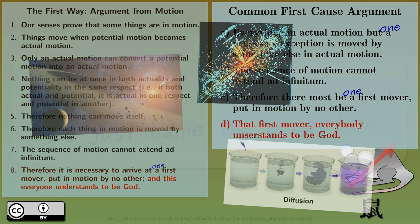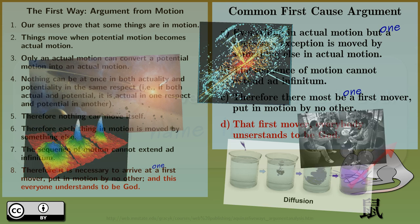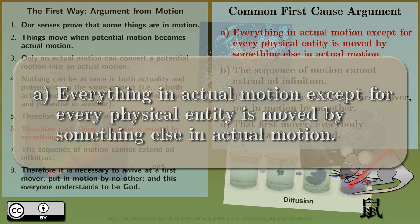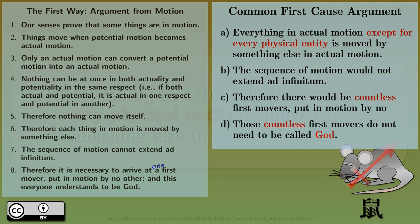This is a very dynamic universe, where everything is in motion. Actual motion is the norm, and rest is an illusion. So one first mover doesn't make much sense. Everything is a first mover colliding with other movers to affect each other's motion. So the premise A just reads: everything in actual motion, except for every physical entity, is moved by something else in actual motion. So, no need to label the only exception with such loud terms as God.